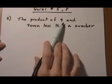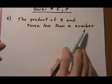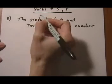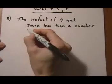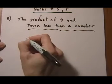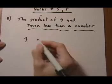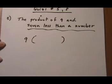The product of 9 and 7 less than a number. Well, product is going to mean multiply. So the product of 9 and some other stuff. Whenever you have a product of a number and some other stuff, put the other stuff in parentheses.